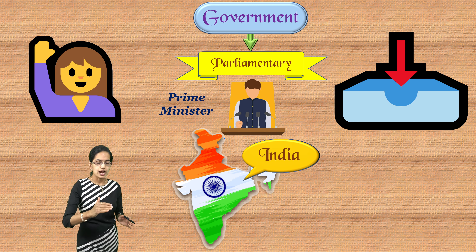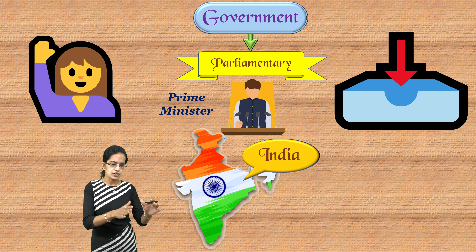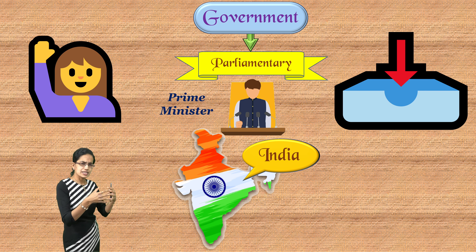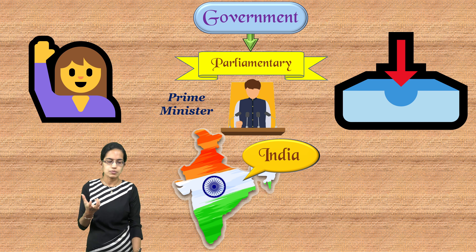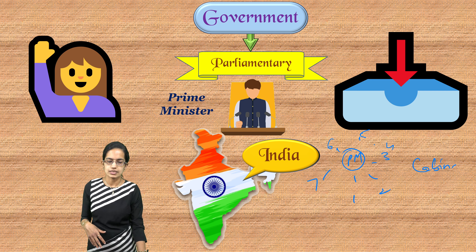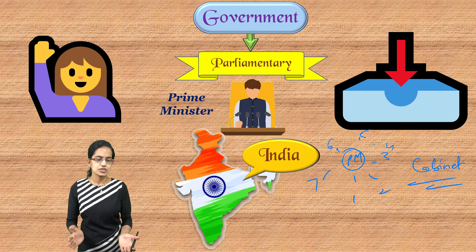Under the parliamentary form of government, there is a president who is the leader of the national government. The executive and legislature are intertwined — both have a deep binding between them. Then we have a cabinet, which consists of party leaders and members who work in close association with the prime minister. These individuals are called cabinet ministers. India is a strong example of this parliamentary form of government.